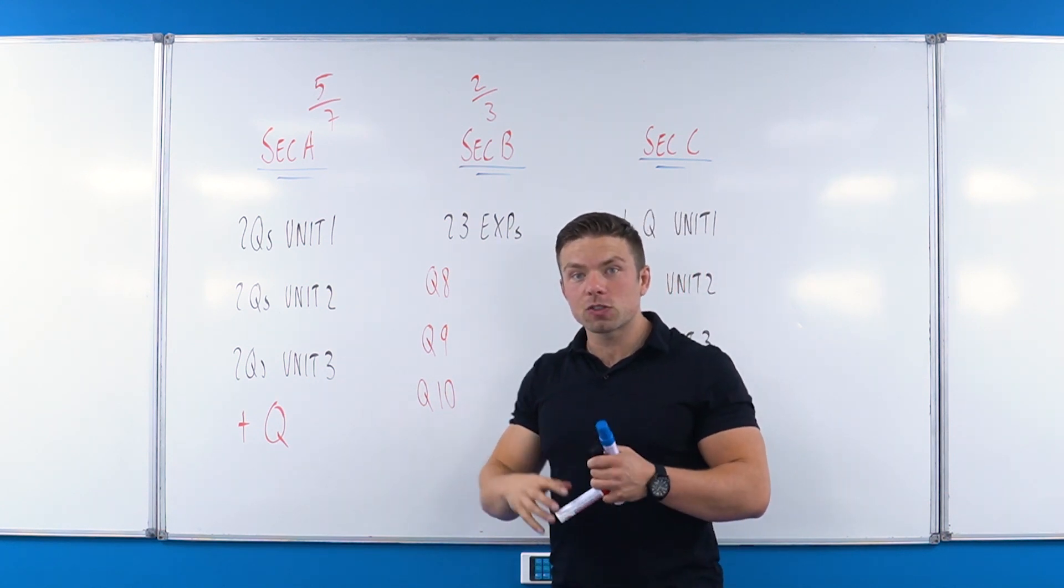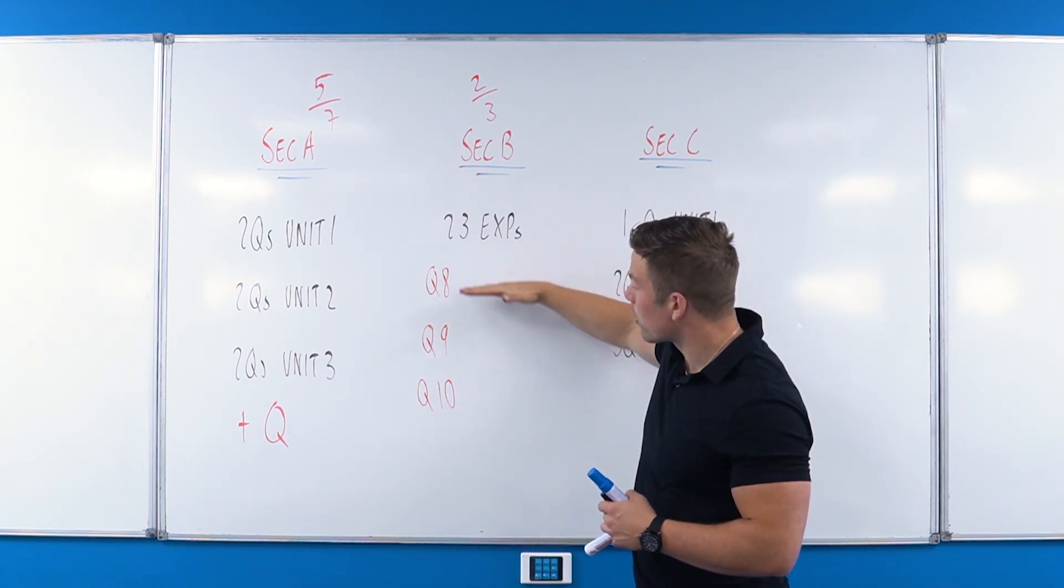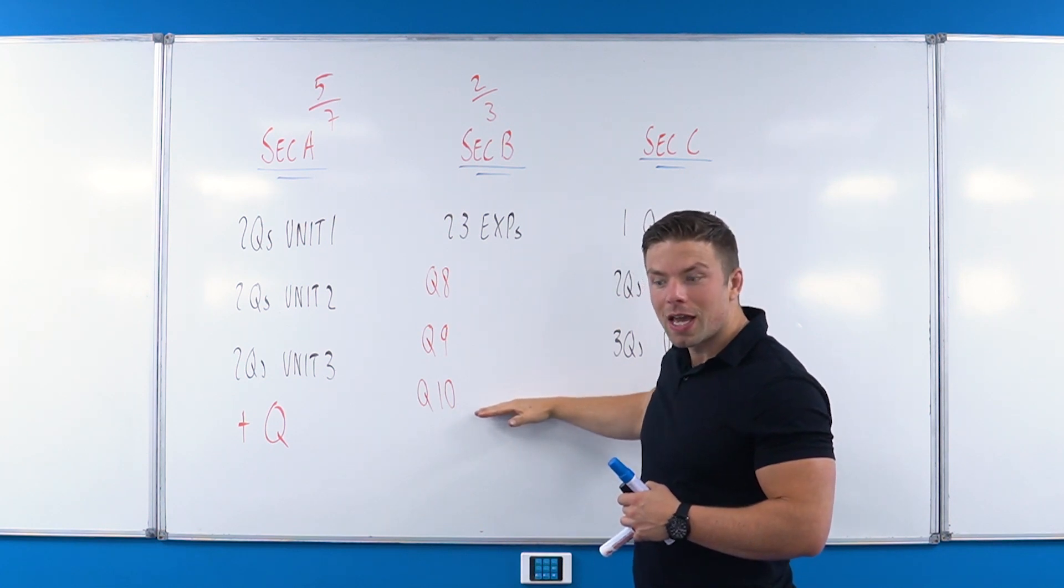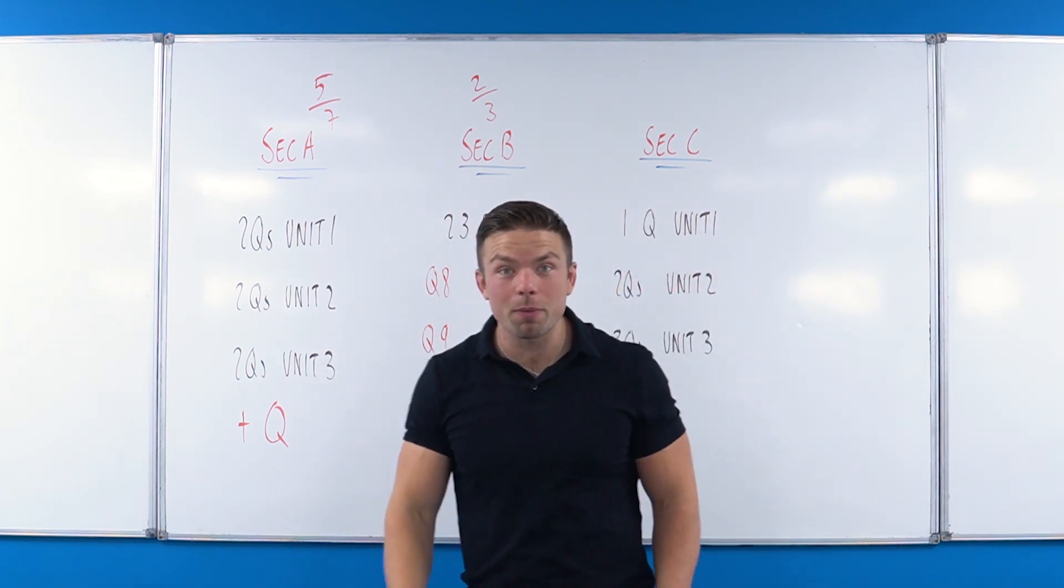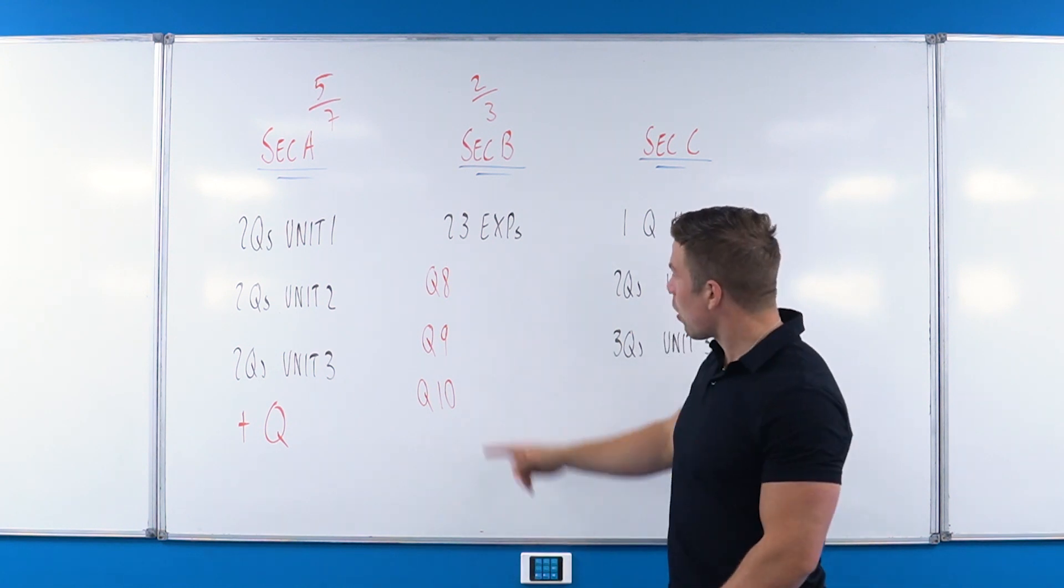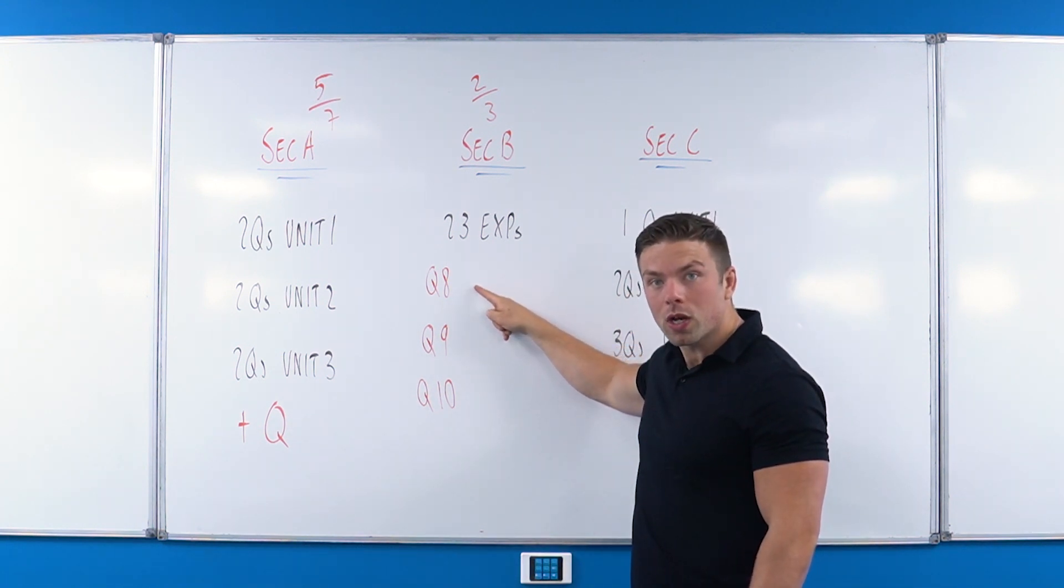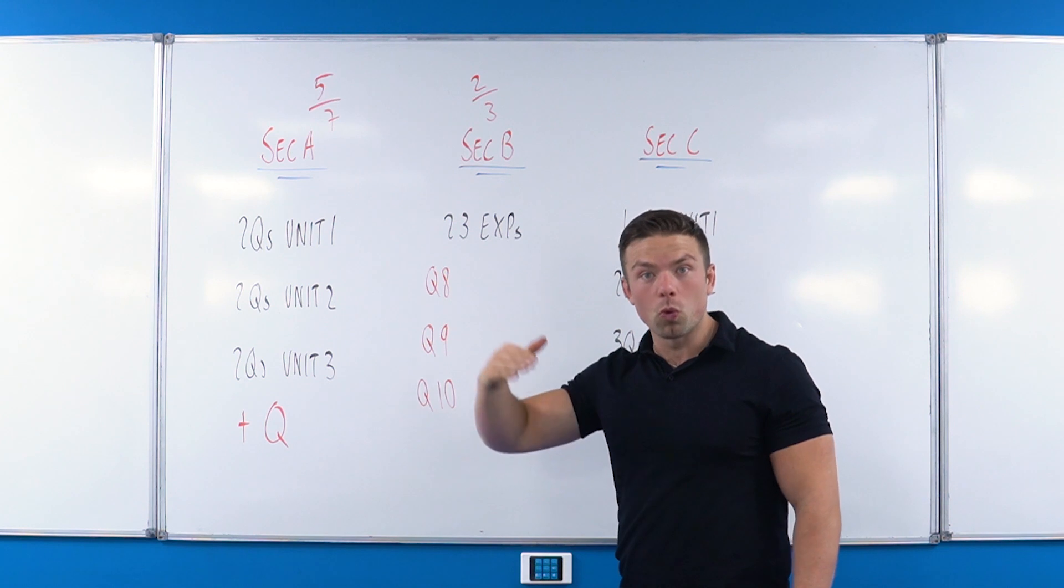However, we know where the experiments come from in question 8, 9 and 10. And instead of actually making it easier for students sitting the exam, I think they've made it harder because they've told us that this question comes from Unit 1 and subunit 2.1 and 2.5. We know that this is basically the rest of Unit 2 and this is Unit 3.